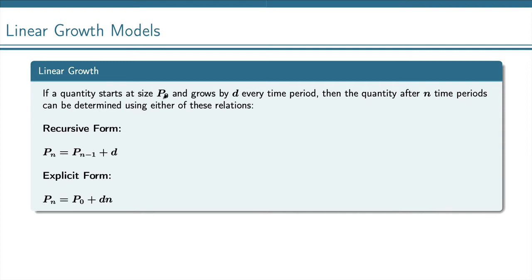So we have a quantity that starts at size P0 and grows by D every time period, whether that's every month, year, etc. Then we can get the quantity after n time periods by using these two formulas. So these are our two linear growth models.